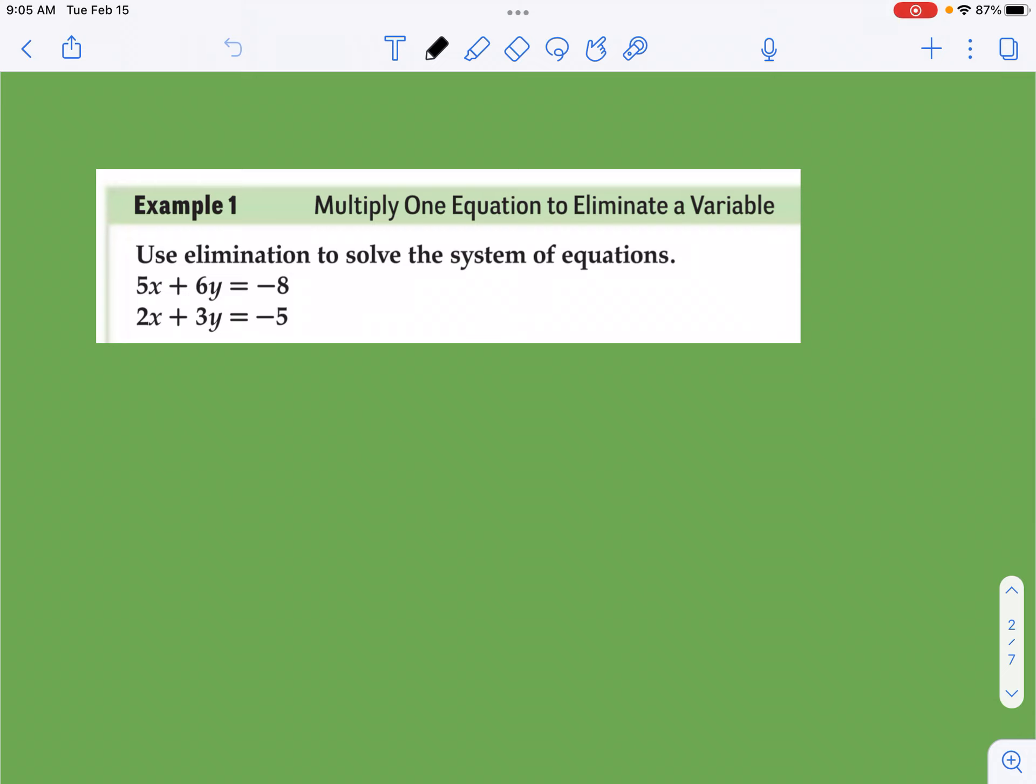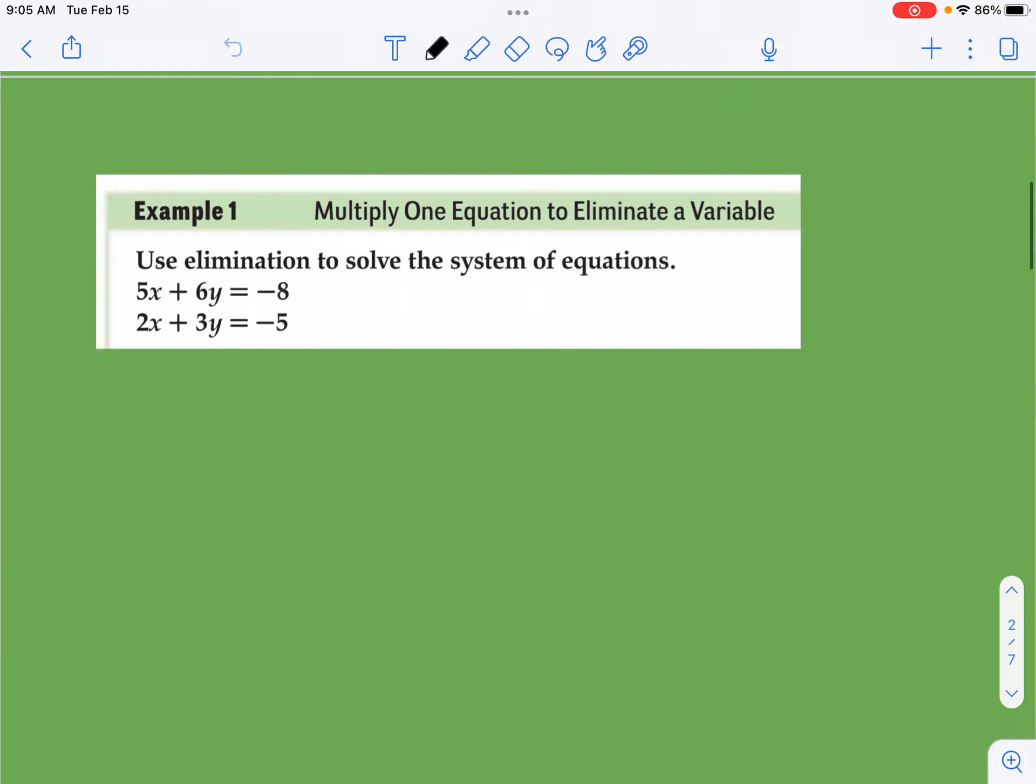So what we look for is we're going to look for, first of all, do I have a variable where both of the coefficients are basically factors of each other, right? Where I can multiply one of the equations, or I should say where one of the equations has a coefficient that is a factor of the other same variable coefficient. So if you look at our x's, 2 and 5, those aren't factors of each other. 2 is not a factor of 5. 5 is obviously not a factor of 2. But if you look at our y's, 3 is a factor of 6. And in order to make my 3 6, I would multiply that bottom equation by 2. So what we're going to do is we're going to take this equation and we're going to multiply it by 2.